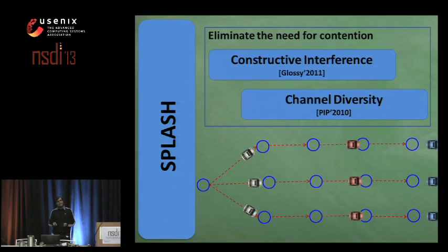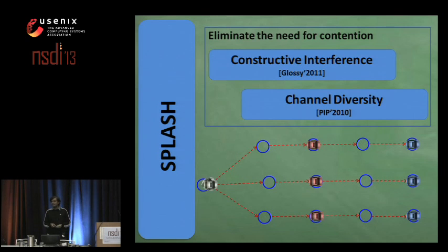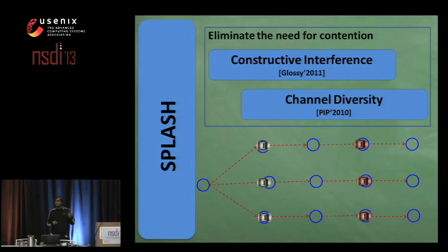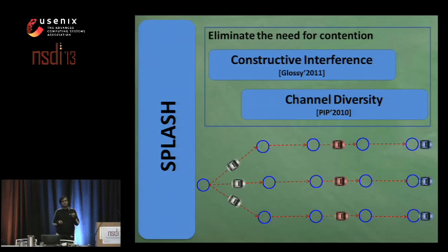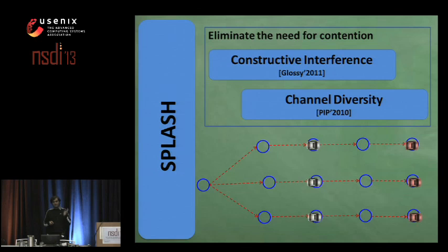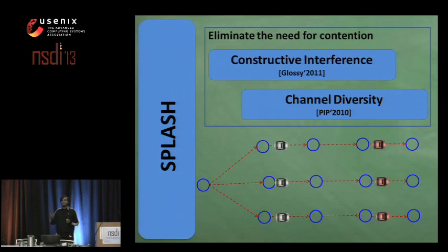These two entities allow us to create a packet pipeline which works somewhat similar to instruction pipelining for CPUs. However, there is a key difference: instead of a single lane, we create multiple parallel packet pipelines.